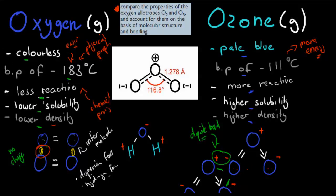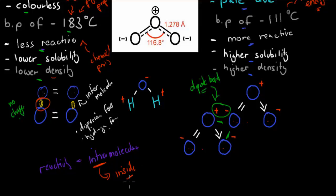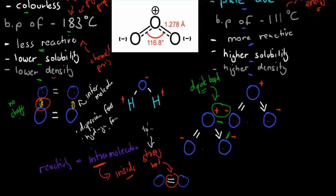So why is oxygen less reactive? Reactivity refers to the intramolecular bonds — the bonds inside the actual molecule, as opposed to the intermolecular bonds between molecules. Between oxygen atoms within the O2 molecule, we have a double bond, and this double bond means that bond is quite strong. A strong bond means we need to invest lots of energy to break it, so it's not very reactive — because we need to invest so much energy for the atoms to split apart and react to form something new.